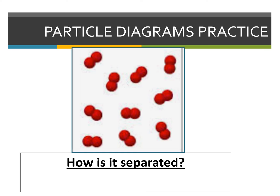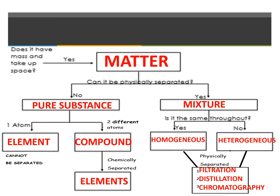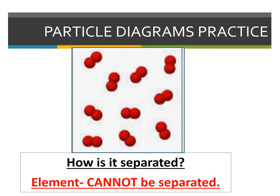This next item is kind of like our challenge problem. We have one type of particle — the red particles. These particles are touching, which means they're chemically combined. But remember, we have to classify whether it's an element or a compound. For an element, it has to be one type of atom; for a compound, it has to be at least two different types of atoms. Right now we have one type of atom. Yes, they may have been chemically bonded together, but those two red particles are the same type of particle. So this is going to be an element. Can we separate elements? No, we cannot separate elements.